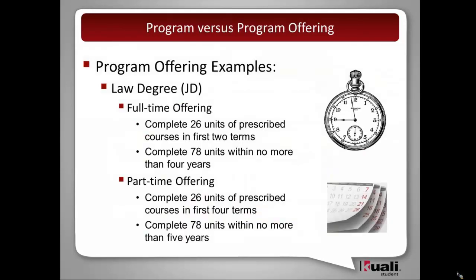We'll move up and do a law degree as an offering example. There is the JD degree. It has a full-time offering which requires the completion of 26 units of prescribed courses in the first two terms of enrollment for the student.